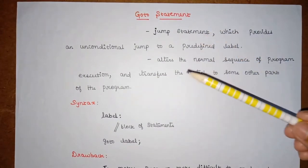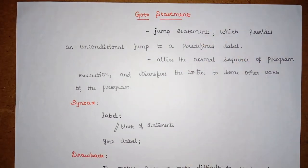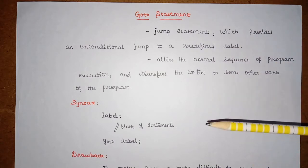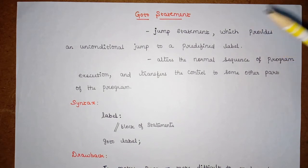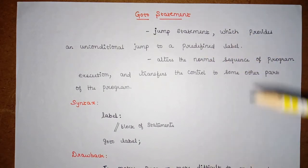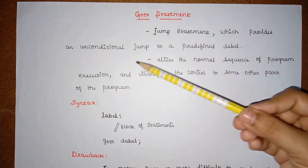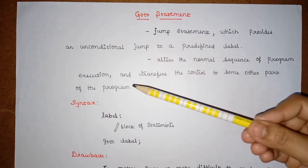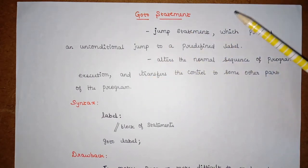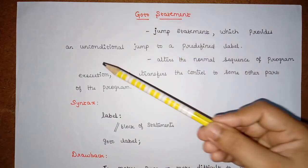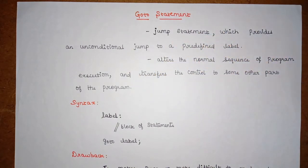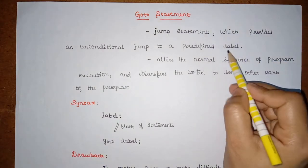We are not going to use any condition here. In previous classes, when you use an if condition or a for loop, statements get executed based on a condition. With an if condition, it decides whether to execute the true block or the else block. But here we are not using any condition for this goto statement — without a condition, we can jump from one statement to another. That is why it is called an unconditional jump statement.